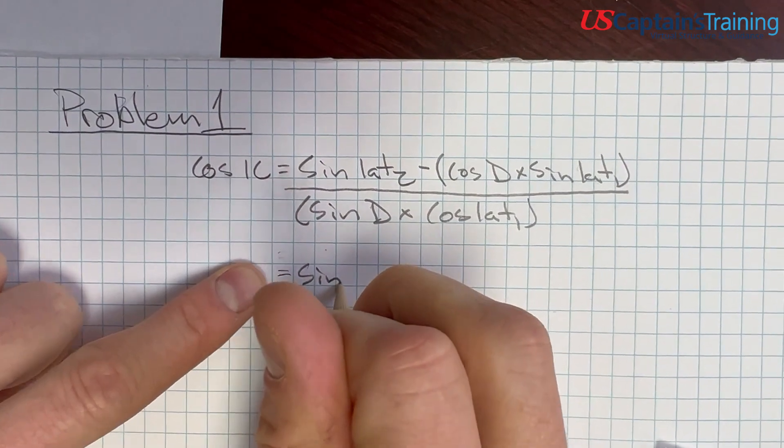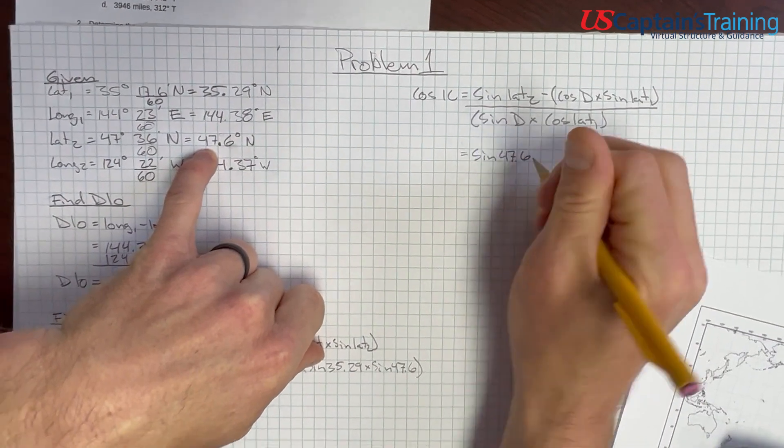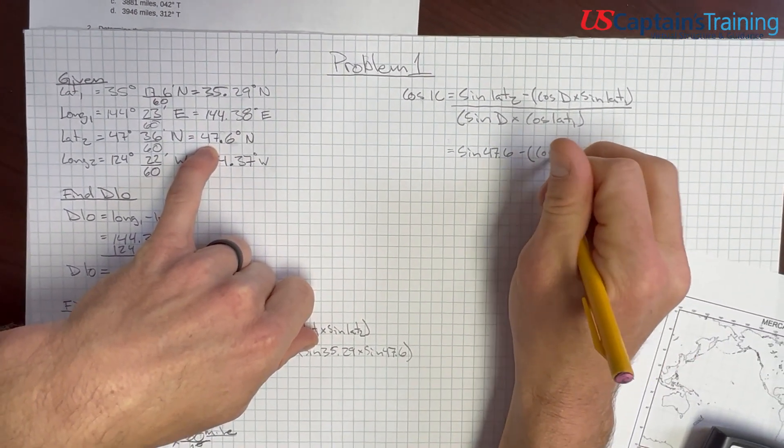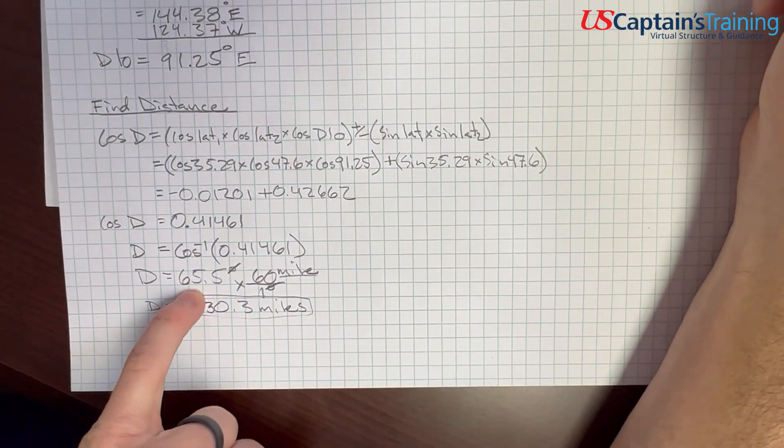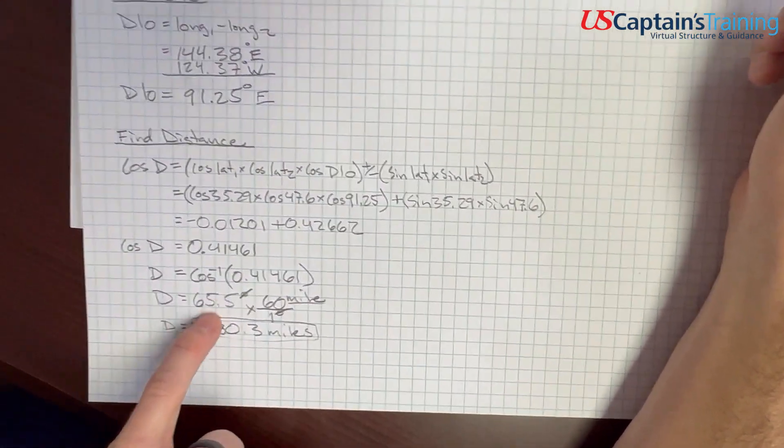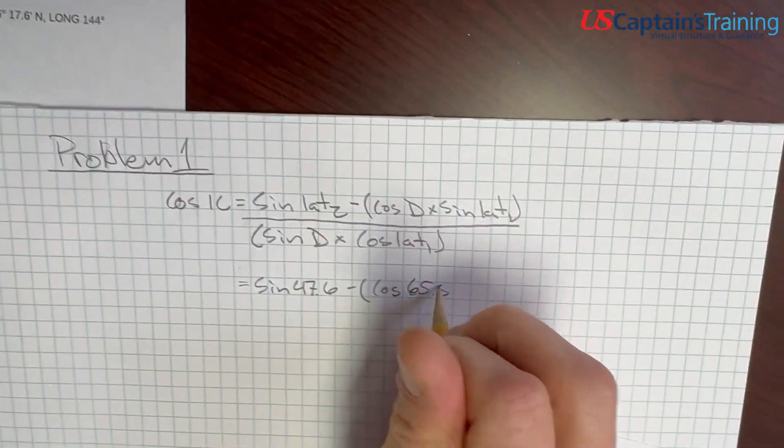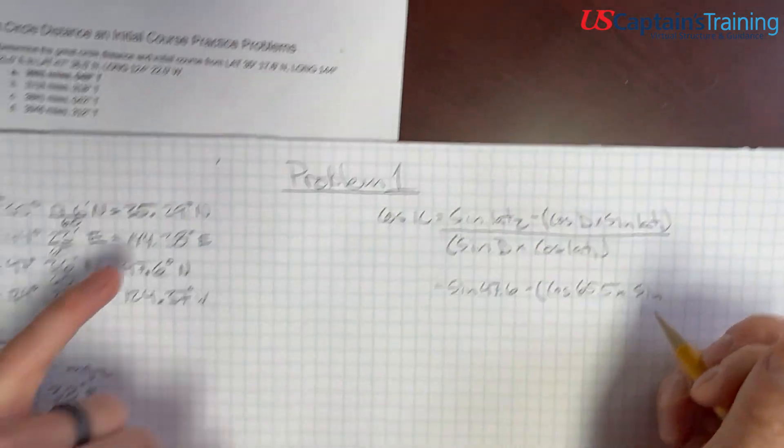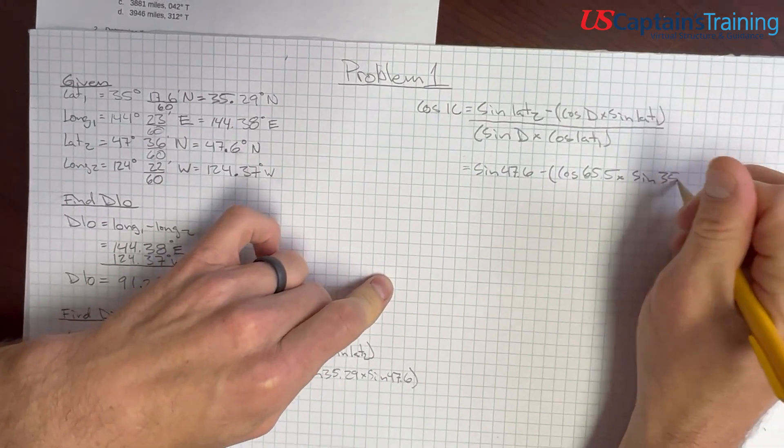So, here we go. Sine lat 2, and it's positive. So, we got sine lat 2, 47.6, minus cosine distance, cosine. And, remember, the distance, although it seems weird, this is the distance. If you use this, you're going to get wrong. Distance 65.5 degrees, times the sine of lat 1, again lat 1, 35.29.